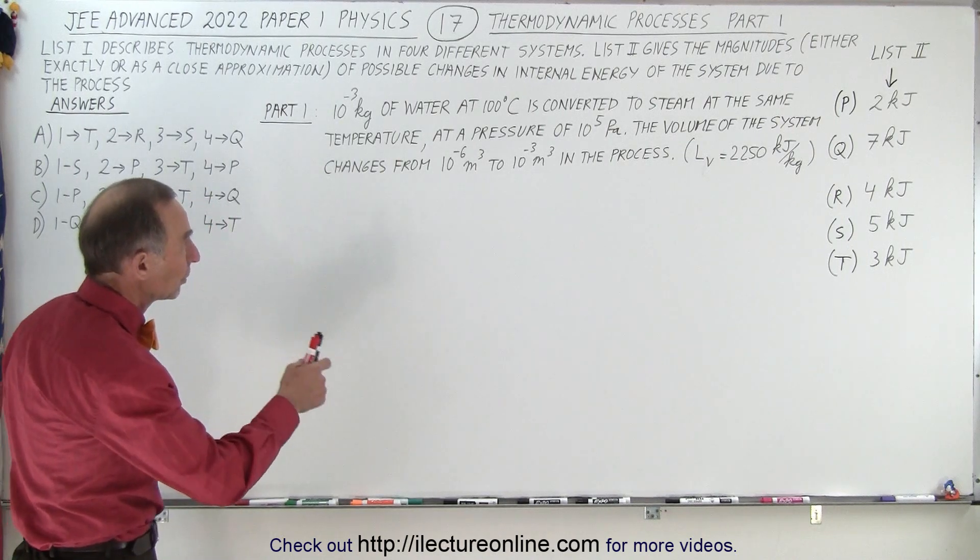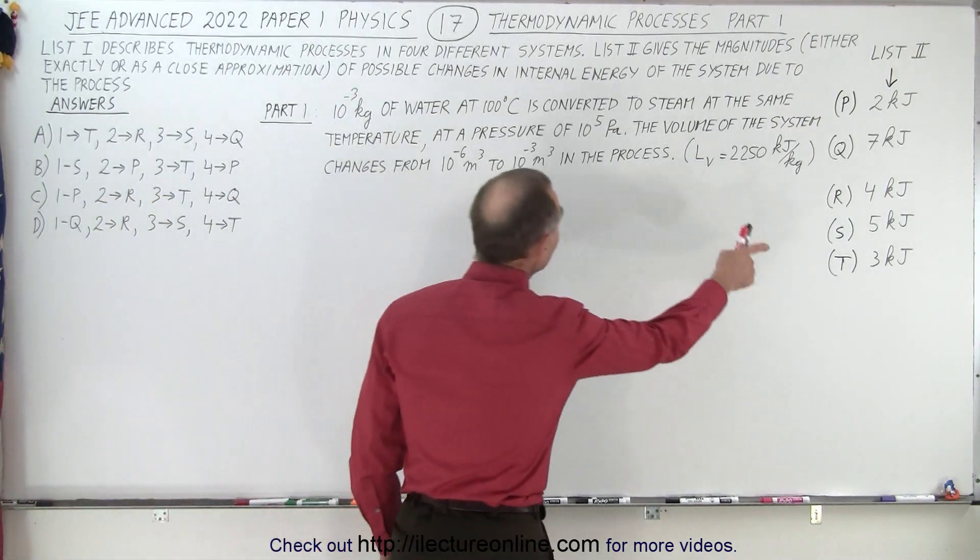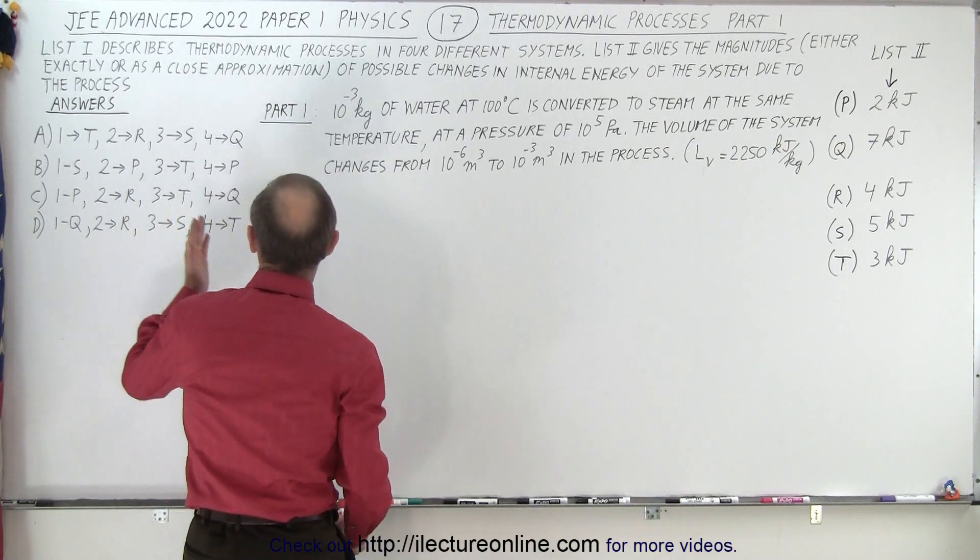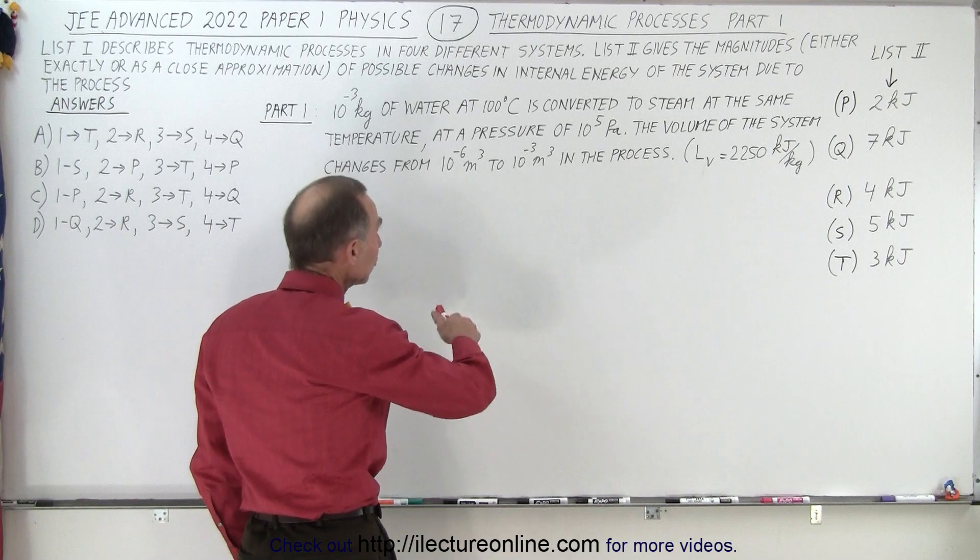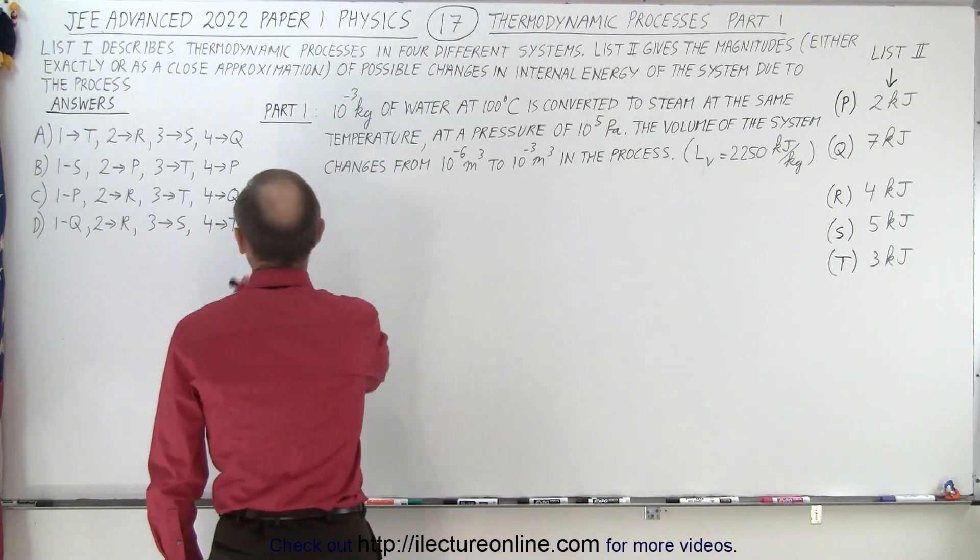List 2, which is right over here, gives the magnitudes, either exactly or as a close approximation, of the possible changes in the internal energy of the system due to the process.